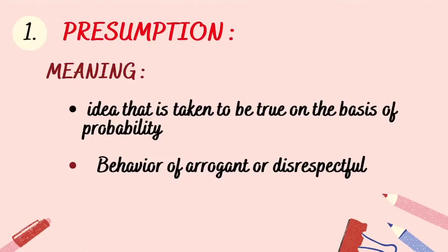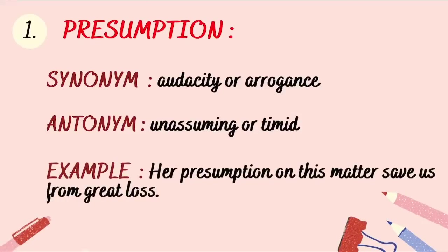Its other meaning is behavior that is arrogant or disrespectful — when someone fails to observe what kind of behavior is permitted or appropriate in certain situations. When someone is unaware of what kind of behavior is respectful in a certain situation, that is presumption. A synonym is 'audacity' or 'arrogance.' The antonym is 'unassuming' or 'timid.'